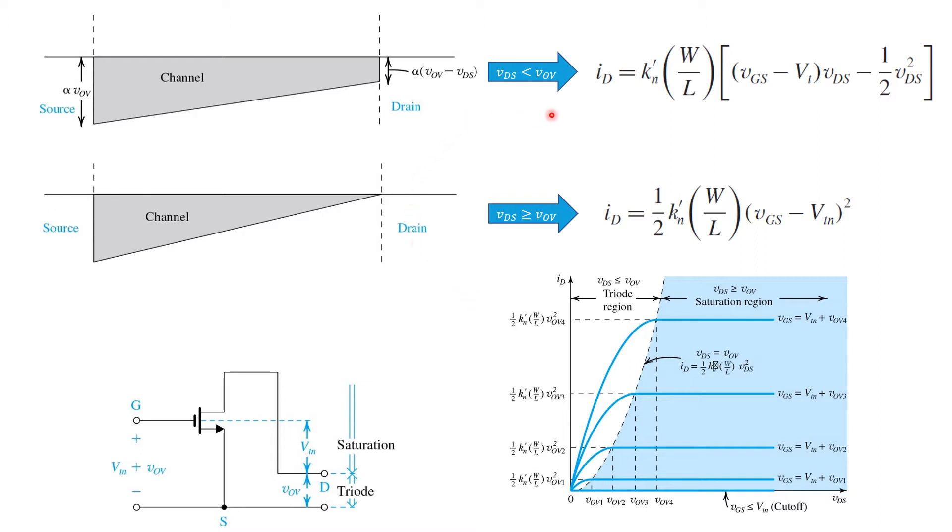First, in triode, where this expression here holds and there's a continuous channel region from source to drain. And secondly, when VDS equals the overdrive voltage and the channel region becomes pinched up at the drain, where we see the classic square law.